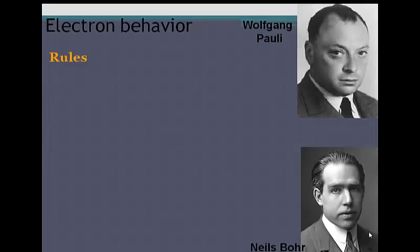From quantum mechanics, we get three rules to electron behavior. The first rule is called Aufbau's rule. And what this says is that electrons will seek the lowest energy levels possible. The lowest energy levels are the ones that are closest to the nucleus. Therefore, electrons will fill energy levels from the lowest or closest to the nucleus before they'll move to the higher energy levels. The Aufbau principle was put together by Wolfgang Pauli and Niels Bohr together.